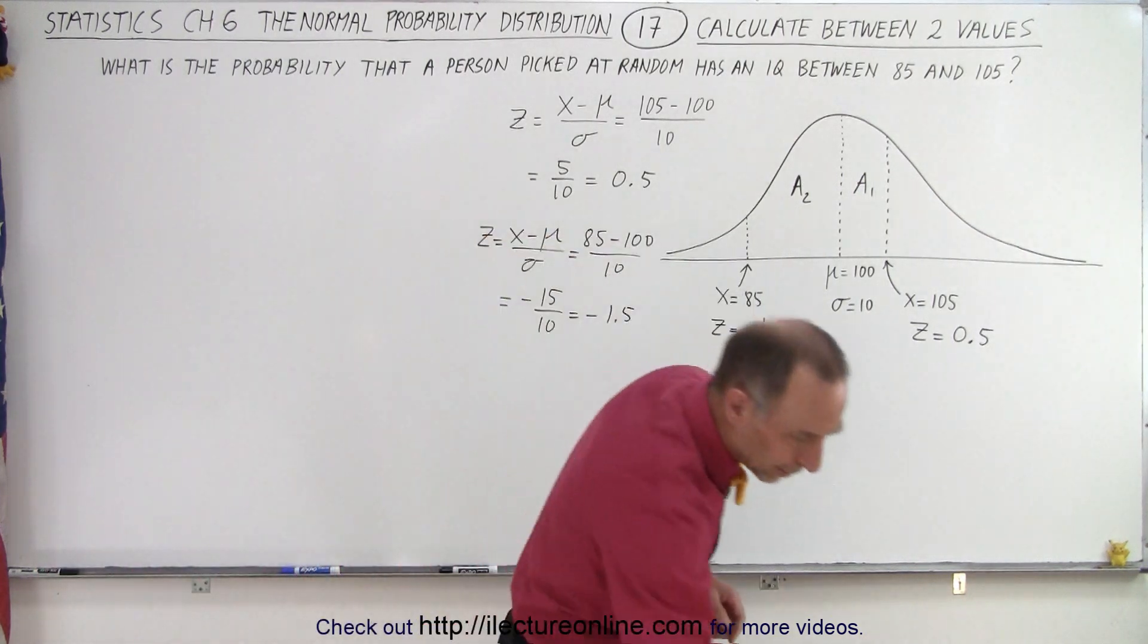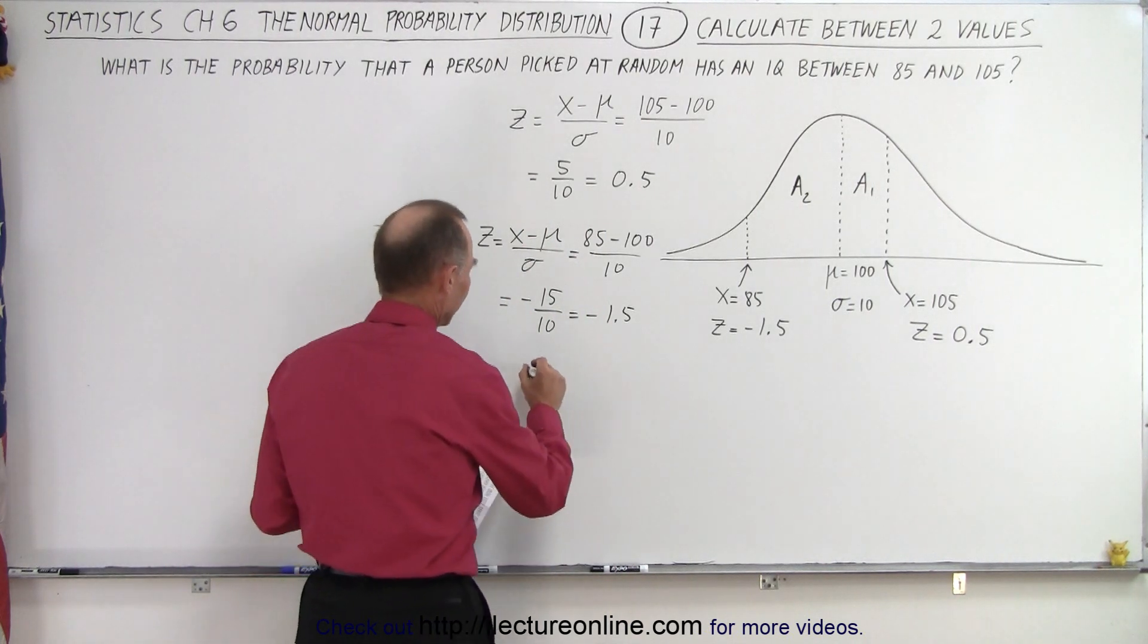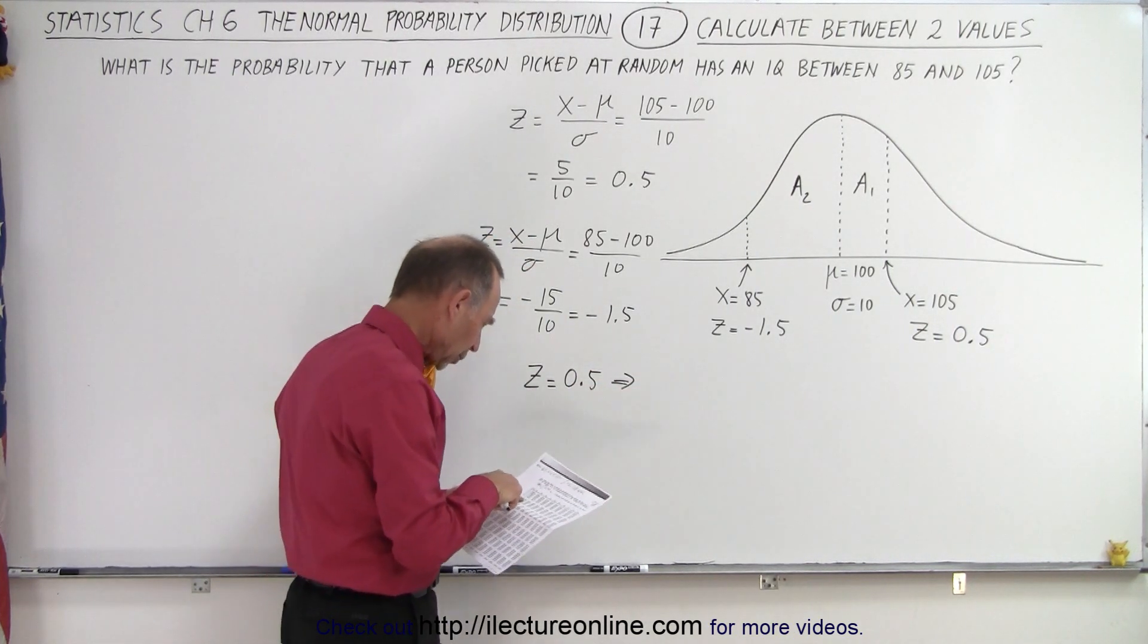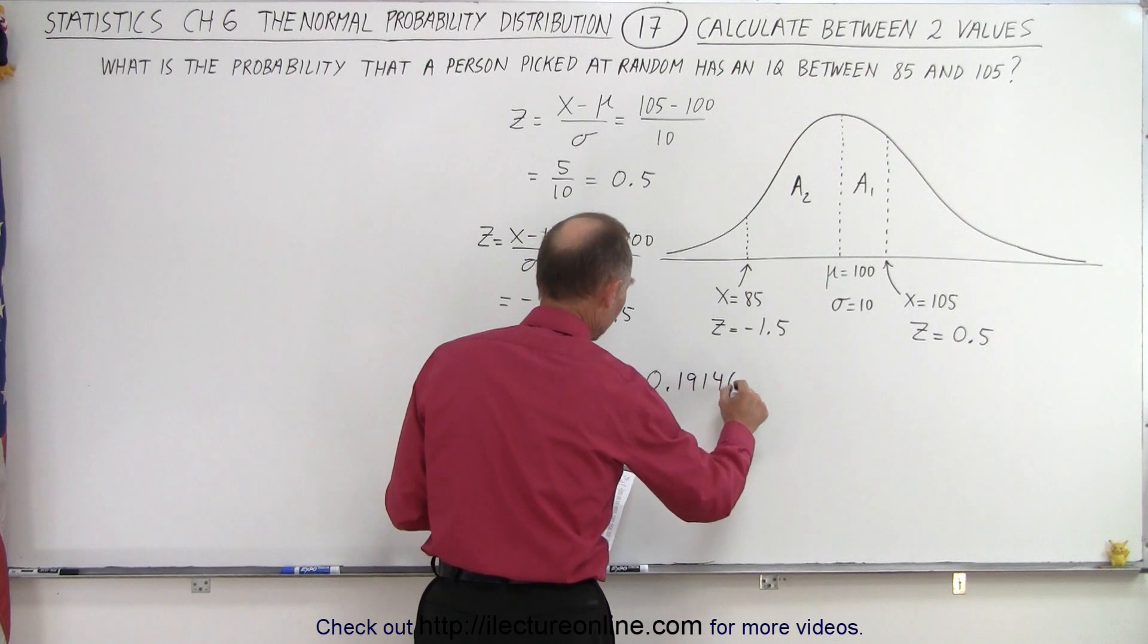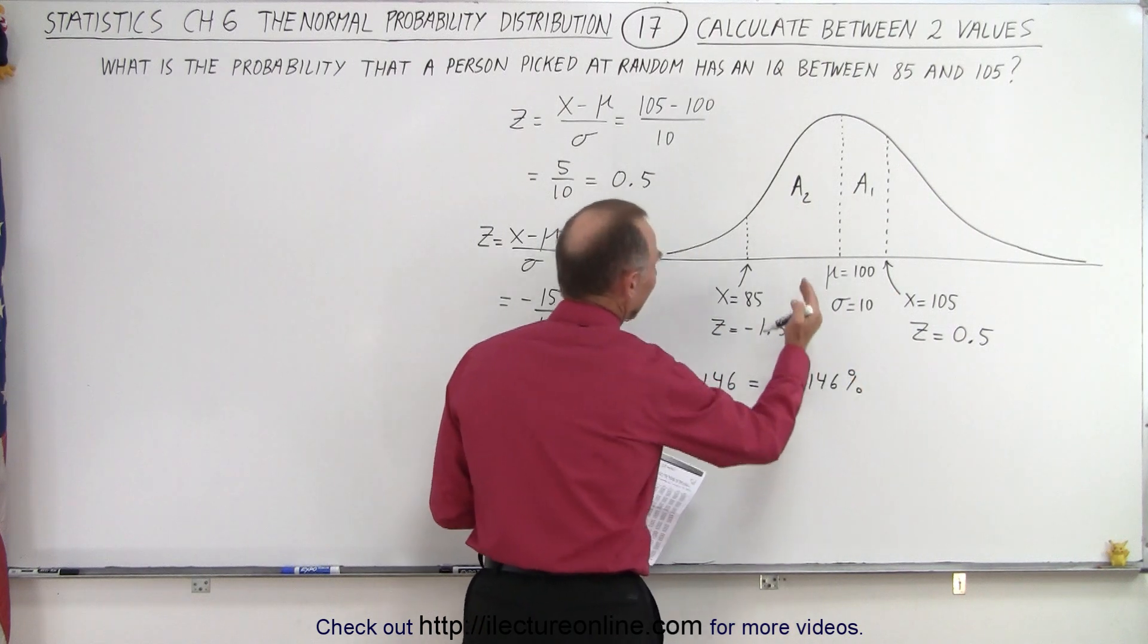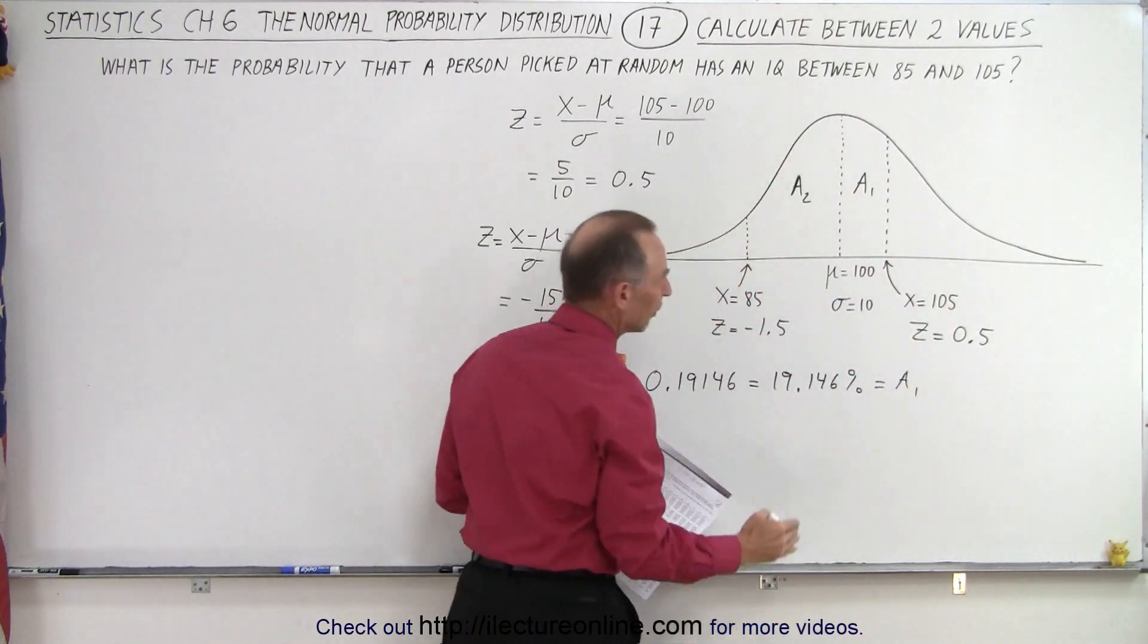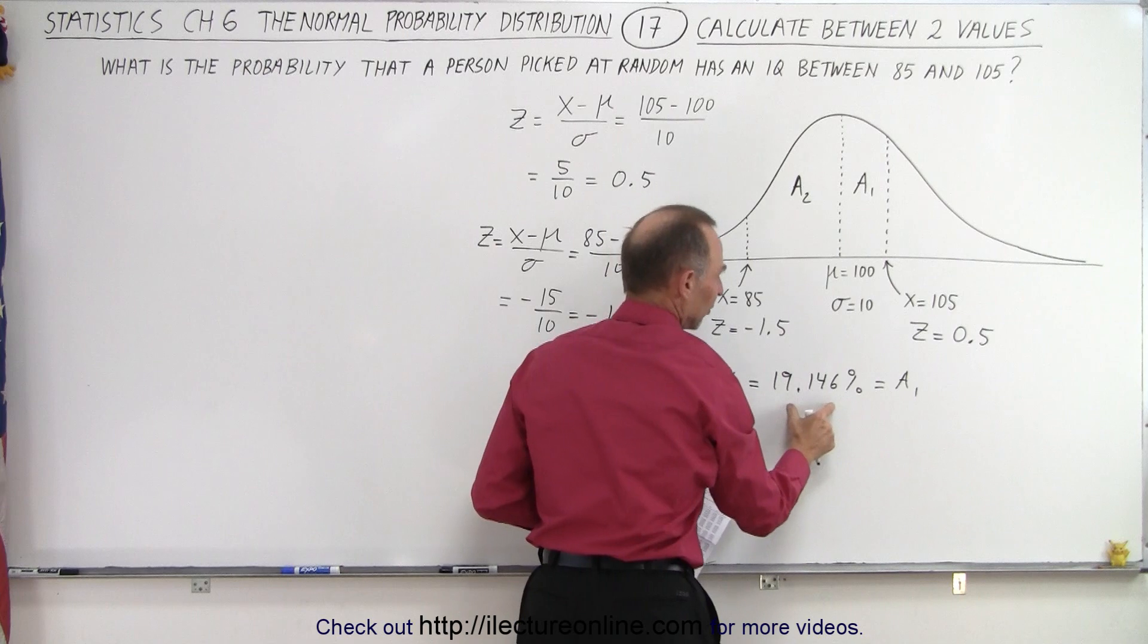So now we need to go and look at the table. And for z equals 0.5, that corresponds to right here, 0.19146, which is 19.146%. So the area underneath the curve here, A1, represents 19.146% of the total area underneath the curve. Of course, you realize that this half is 50%, that half is 50%, and this slice right here represents a little bit less than 20% of the total area.